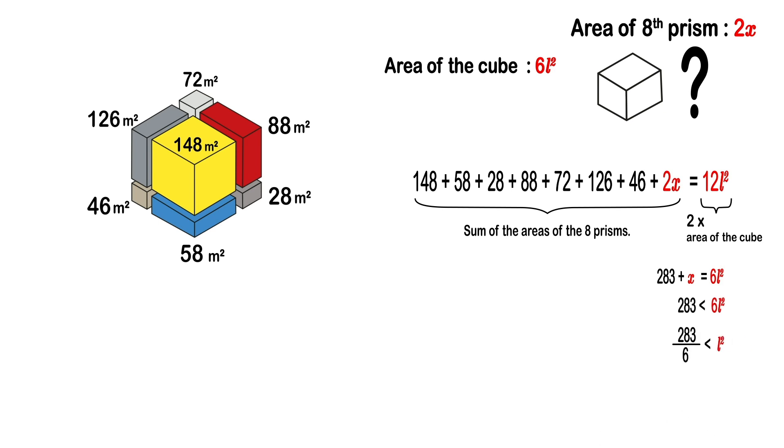Then, as 283 should be smaller than 6 square of L, L will be greater than 6. Likewise, as 2x should be smaller than 148, this times square of L will be smaller than 59.5.